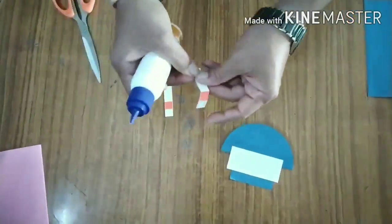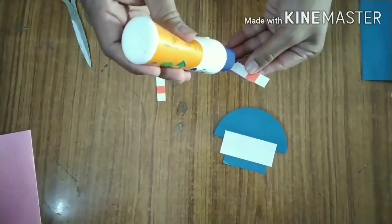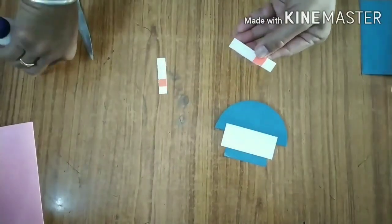Paste the strips on top of the boat. Make sure that one strip is taller than the other.